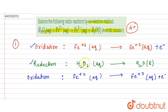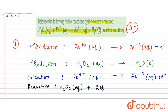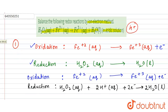For the reduction reaction, we include H⁺ ions since this is acidic medium, and there is a gain of two electrons. The balanced reduction half-reaction is: H₂O₂ (aq) + 2H⁺ (aq) + 2e⁻ → 2H₂O (l). These reactions are already balanced by atoms.